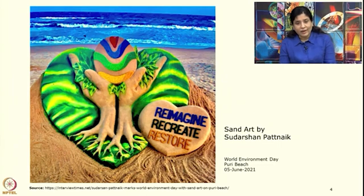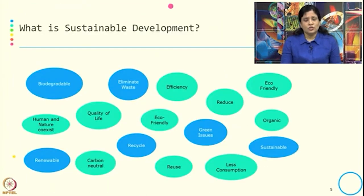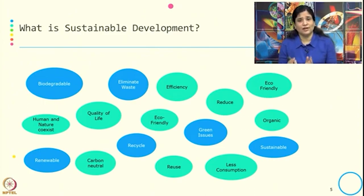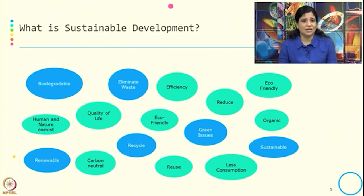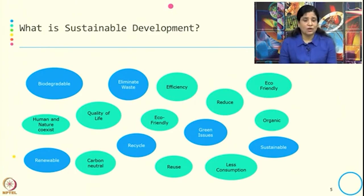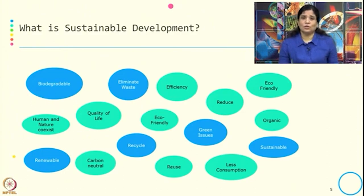Coming to what we understand as sustainable development — if you ask anyone, you get various answers. Someone says it is about eliminating waste; someone talks about quality of life; someone says it is eco-friendly or environmentally friendly; some say it is about green issues, carbon neutrality, or less consumption. So more or less we understand what sustainable development is, using the words that feel relevant to us — biodegradable, renewable — whatever area we feel action is needed.